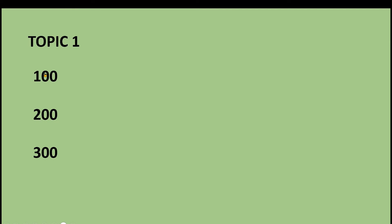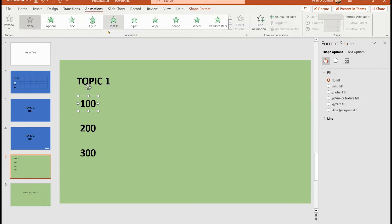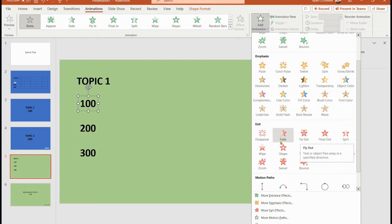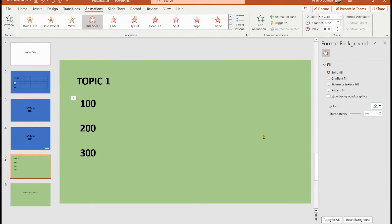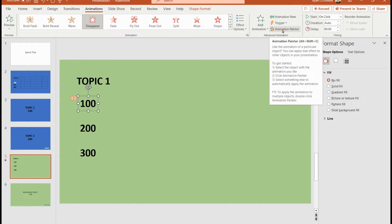Now I'll hyperlink the 100 box to Topic One 100. Important: I clicked on the text box itself — the object — not the words inside. That distinction matters. Then go to Animations and add an exit animation. I'll choose 'Disappear' as the most basic exit. When clicked, the box will both hyperlink and disappear, but I need to associate the click trigger properly.